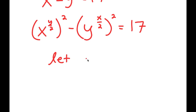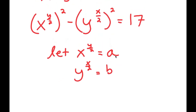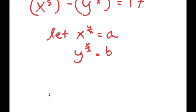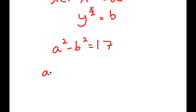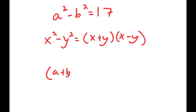Now, I'm going to let x to the power of y over 2 equal variable a and y to the power of x over 2 equal variable b. So if I substitute in a and b, I get a squared minus b squared is equal to 17. Now, if I have something in the form x squared minus y squared, this is equal to x plus y times x minus y. So a squared minus b squared equals a plus b times a minus b, which equals 17.